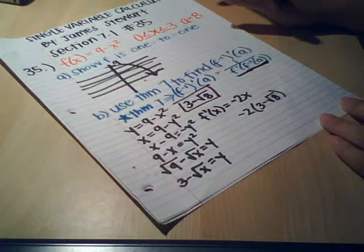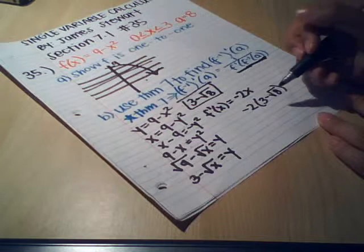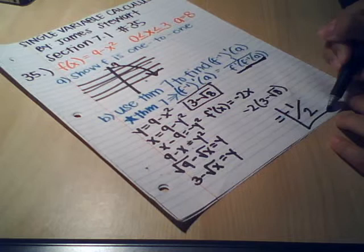So once we have this, we can solve and ultimately, we're going to solve this back in the equation. And ultimately our answer will be negative 1 half.